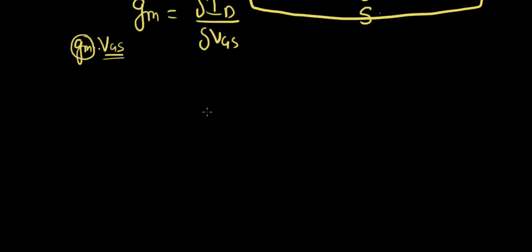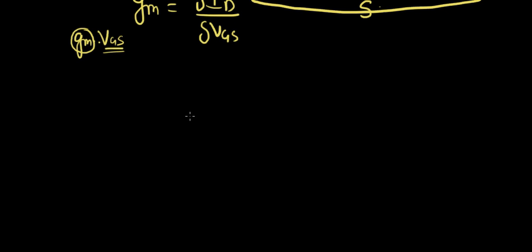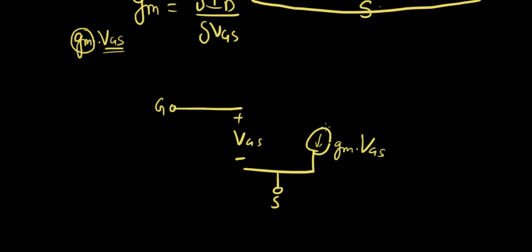Now, a few lectures before this, we've seen a few second order effects like channel length modulation, body effect and such things. Why don't we include that in this small signal model and see what we get actually. So this is the gate, VGS. This is the source.